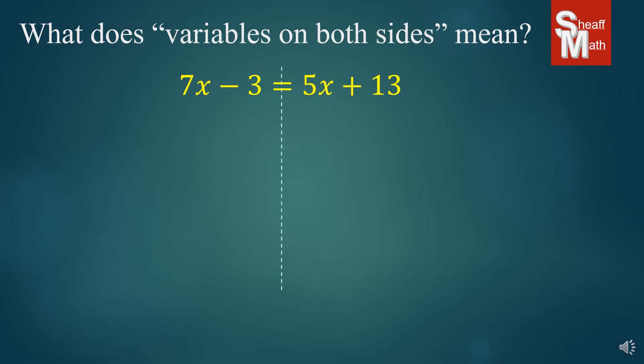What we're going to do is take this 5x and get rid of it. Well, how do we get rid of it? Mathematically we're going to subtract 5x on both sides. By doing that we cancel that 5x out and now 7x minus 5x is 2x minus 3, and we're left with 13 on the right.